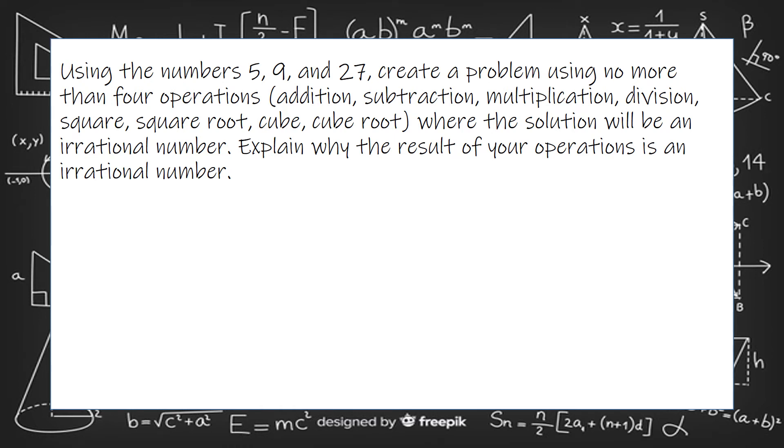Using the numbers 5, 9, and 27, create a problem using no more than four operations: addition, subtraction, multiplication, division, square, square root, cube root, or cube, where the solution will be an irrational number. Explain why the result of your operation is an irrational number.